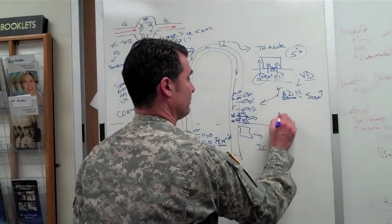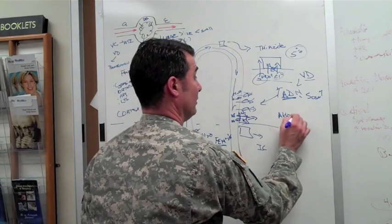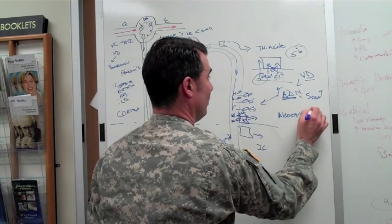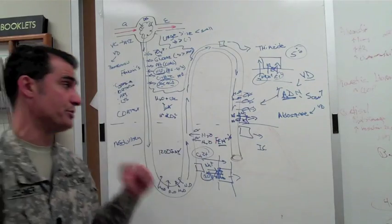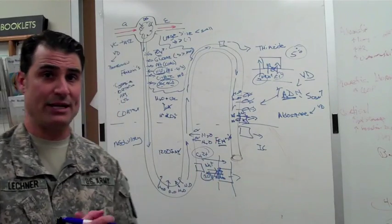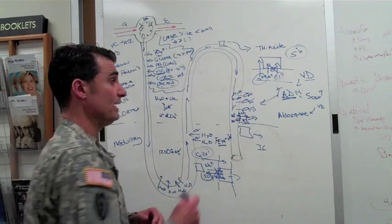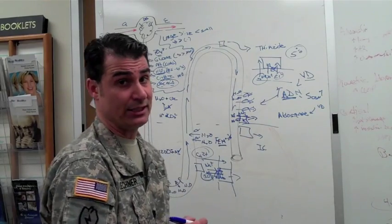That is under the influence of aldosterone. Now aldosterone, like everything else, if you're volume depleted, aldosterone is going to be turned on because you're going to reabsorb your sodium in order to reestablish intravascular volume, and you're going to exchange that for a K.